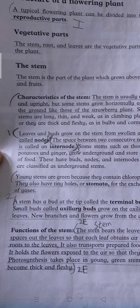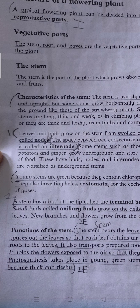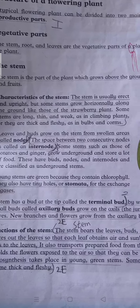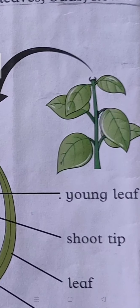Young stems are green because they contain chlorophyll. Chlorophyll is a green pigment present in the leaves of plants to absorb sunlight. These help in photosynthesis.